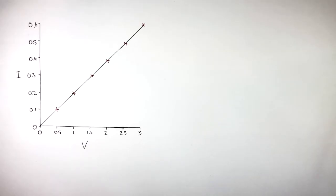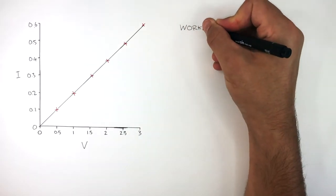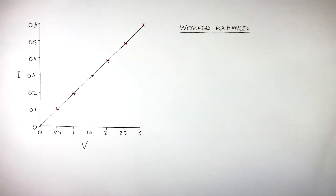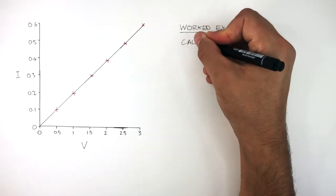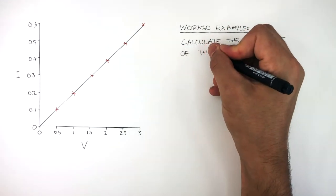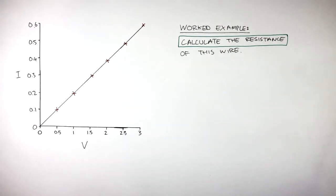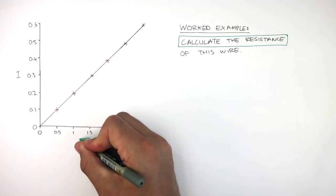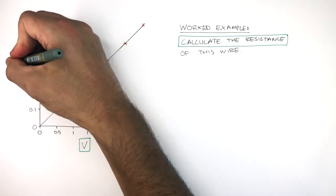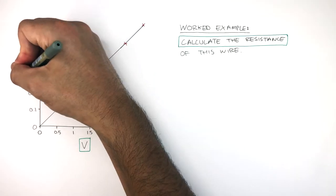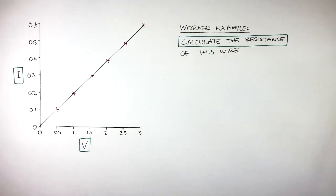Here is a potential difference and current graph of an ohmic conductor. We're going to go through a worked example of the kind of exam question you could potentially get in an exam. The question is: calculate the resistance of this wire. To do that, we'll need some data from the graph. On the x-axis we have potential difference, and on the y-axis we have current.